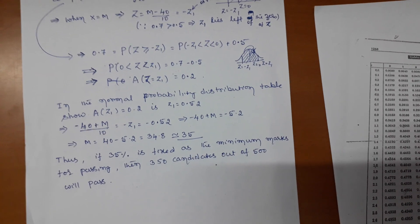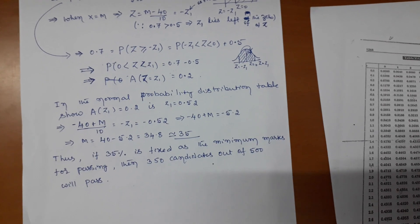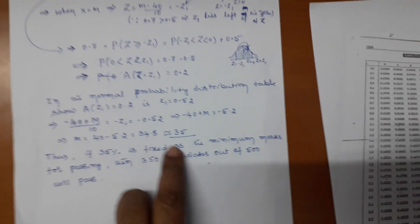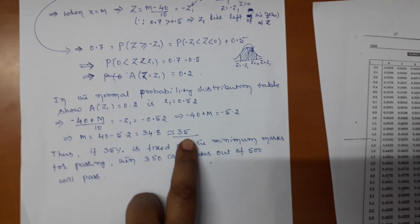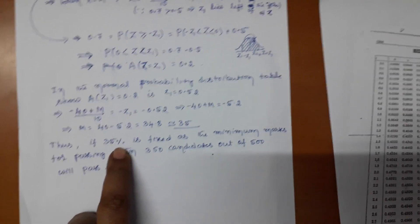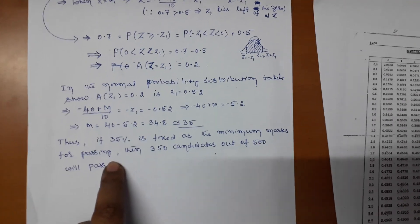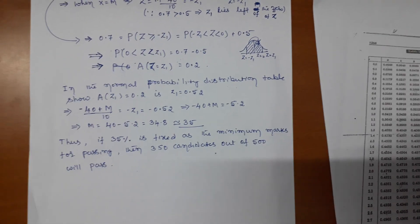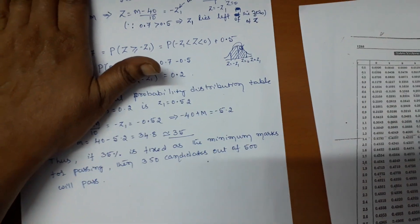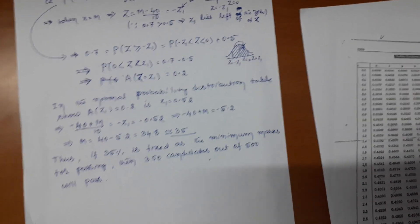Solving: m − 40 = −5.2, so m = 34.8. Since the minimum passing marks must be a whole number, we round 34.8 up to the nearest whole number, which is 35. Therefore if 35% is fixed as the minimum marks for passing, we expect 350 students to pass out of 500. This is how we find the minimum percentage of marks from a given area.